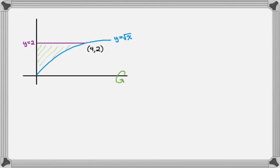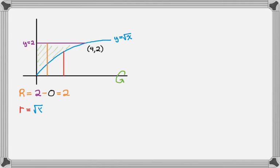I start at the axis and go out until I hit the outer edge of the region I'm rotating. The outer edge is y equals 2, so the big radius is 2 minus 0 — since y equals 0 is the x-axis — which is 2. Then I repeat this: start at the axis and go until I hit the inner edge of the region. That gives me the smaller radius, which is radical x minus 0, just radical x.